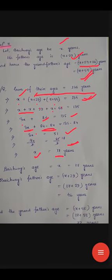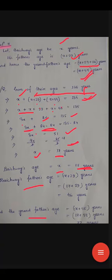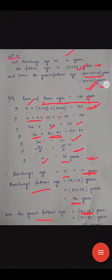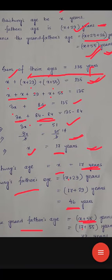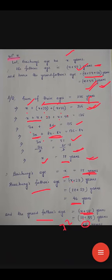Bai Chung's age is X equals 17 years. His father's age is X plus 29, putting in 17: 17 plus 29 equals 46 years. His grandfather's age is X plus 55: 17 plus 55 equals 72 years. So Bai Chung's age is 17 years, his father's age is 46 years, and his grandfather's age is 72 years. That is the solution. Thank you.